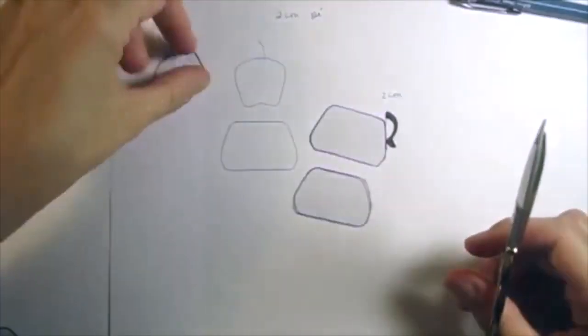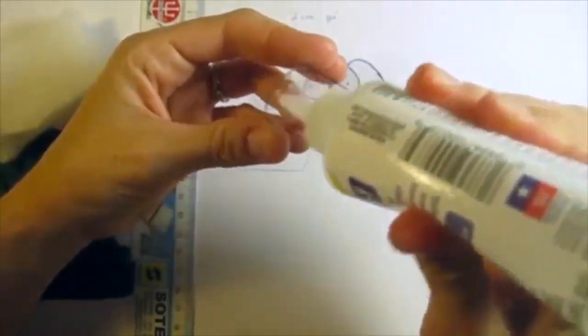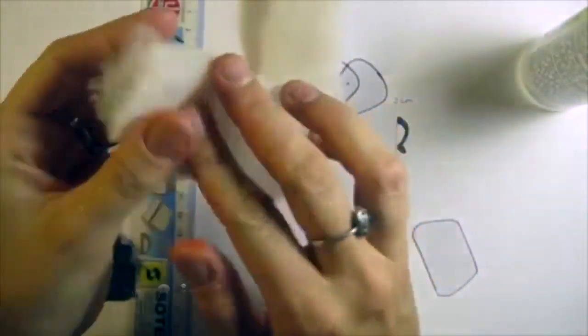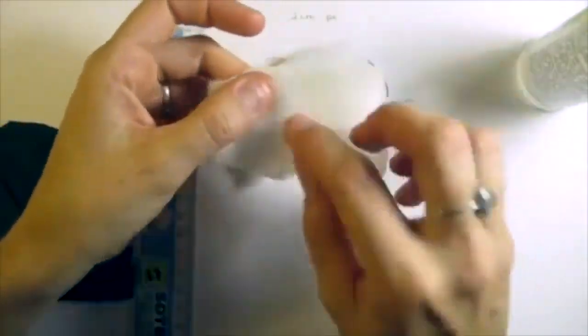Cut 4 pieces, 2 for each cushion. Glue some polyester fiber fill sheet with fabric glue and trim the edges.